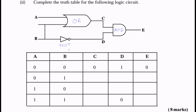Now that we know which gates we're dealing with, the easiest one to work with first is our NOT gate. The NOT gate simply changes whatever your input is to the opposite. So if your input is 0, you should get 1. If your input is 1, you should get a 0. A 0 would produce a 1 and a 1 would again produce a 0. So we finished the NOT gate section.